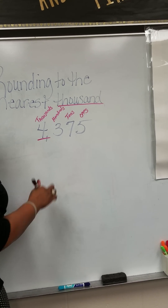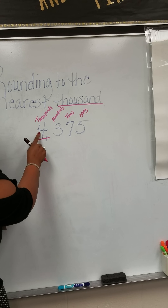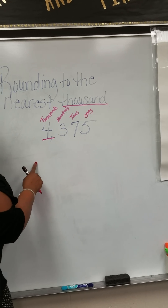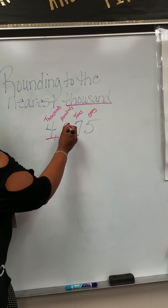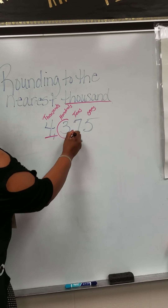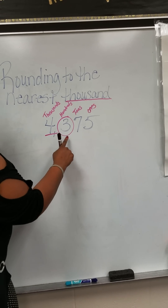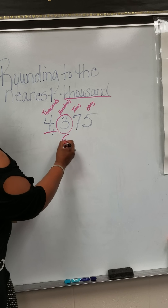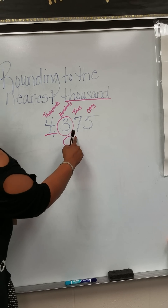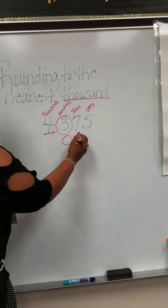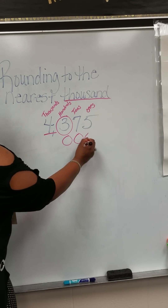So the rule is: you underline the number that's in question, circle the number behind it, and make the circle number and all the numbers behind it zeros.